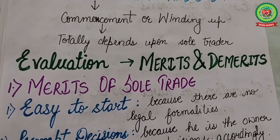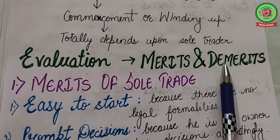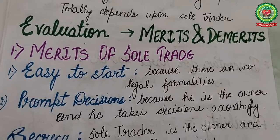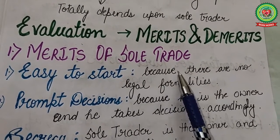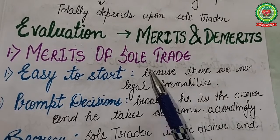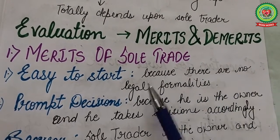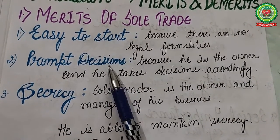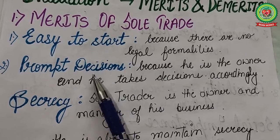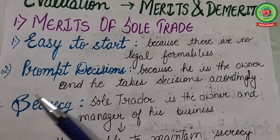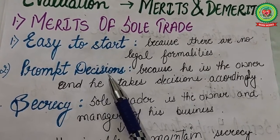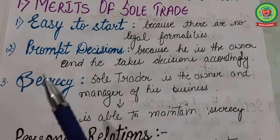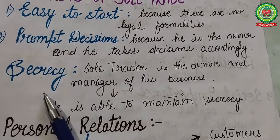Next is the evaluation of sole trade business — its merits and demerits. First, we will discuss the merits. The first merit is easy to start — it is very easy to start this type of business organization because there are no legal formalities required. Next is prompt decisions — the sole trader is alone responsible for business matters and is not bound to consult any other person, so he can take decisions according to his own choice.